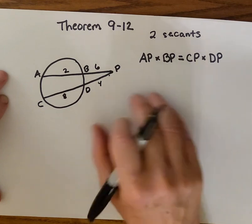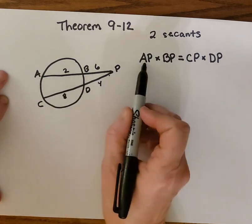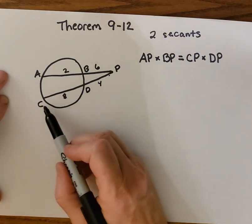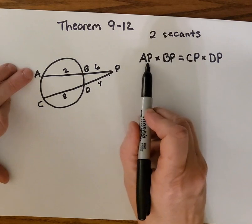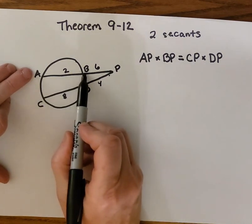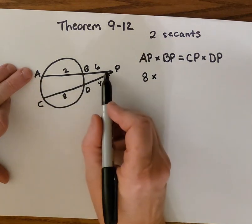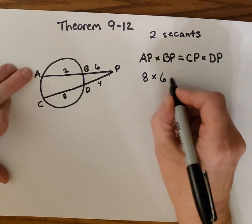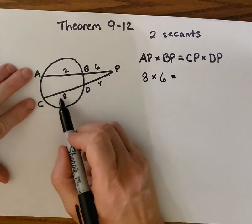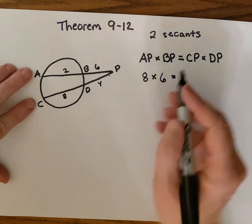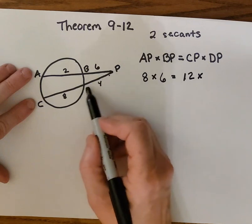Make sure you don't mess it up in your homework. Theorem 9-12 says that this entire segment AP multiplied by the part outside of the circle equals this entire segment multiplied by the part outside of the circle. The entire segment AP is 2 plus 6, so it equals 8. Multiply that by the external part, which is 6. Don't make the mistake of separating the segments — this entire segment is 8 plus 4, which is 12.